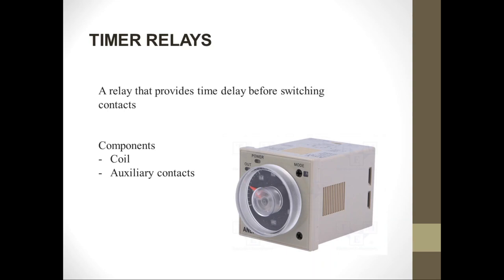Just like a relay, the timer needs its coil to be energized before it can function. With an ordinary relay, when the coil is supplied with the rated voltage, the contacts change position right away. For a timer, when the coil is energized, it does not switch the auxiliary contacts immediately.